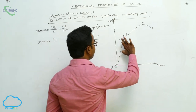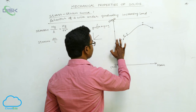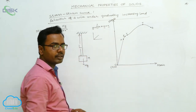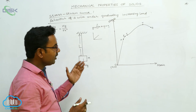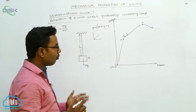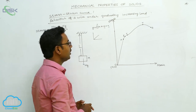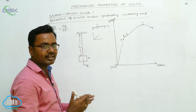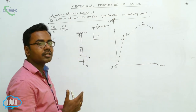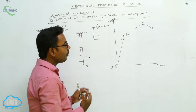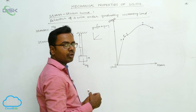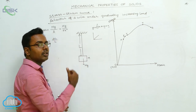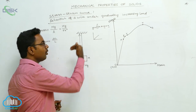Thereafter, by increasing the load, we reach point E — the elastic limit. Point E is called the elastic limit because up to point E the wire retains its elasticity property. That is, up to point E, if you remove the load attached to the wire at any point, the wire regains its original length.